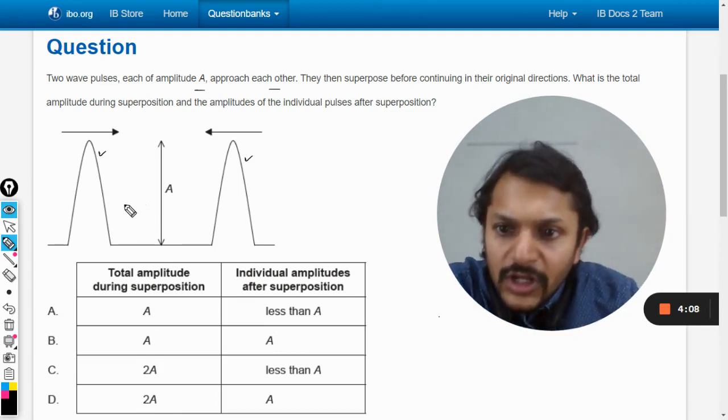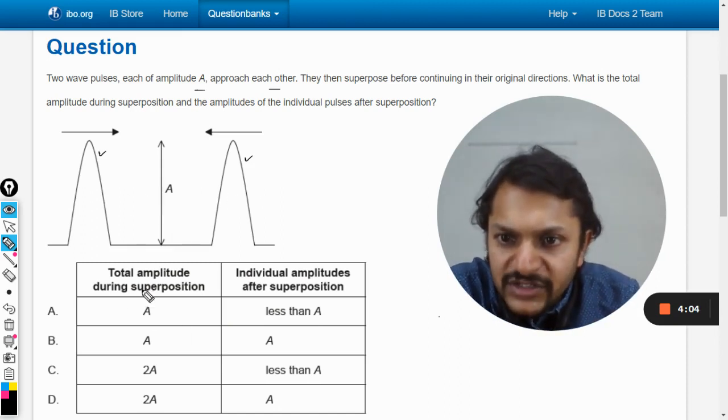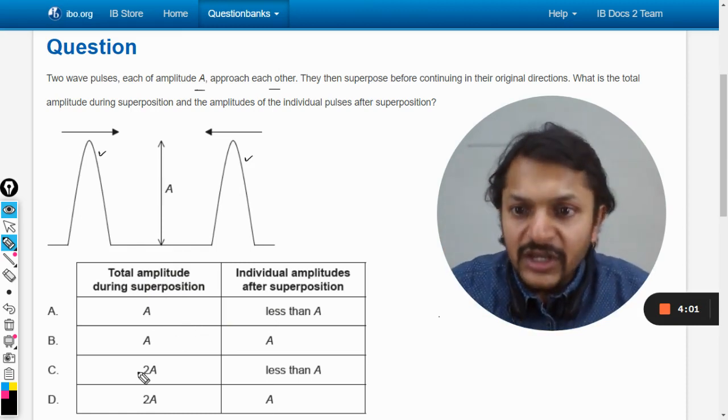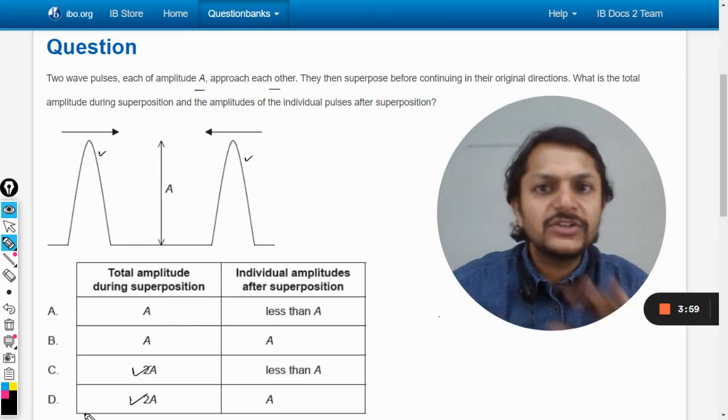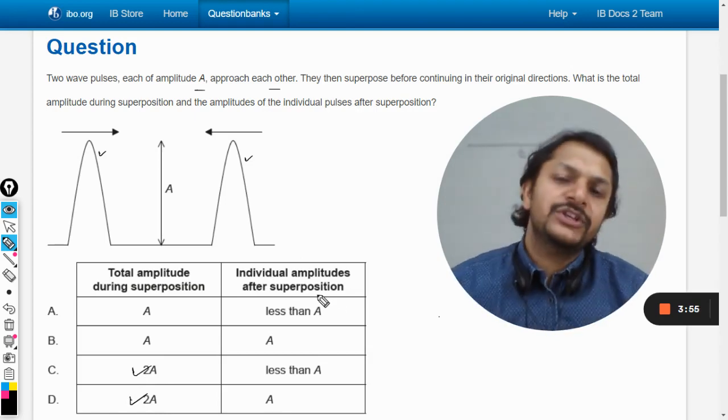Now in this case, both of them are crests. So when they overlap each other, the total amplitude during superposition will definitely be 2A. There's no doubt about it. Individual amplitudes after superposition, now this thing is they are coming with amplitude A, they overlap and it becomes double.